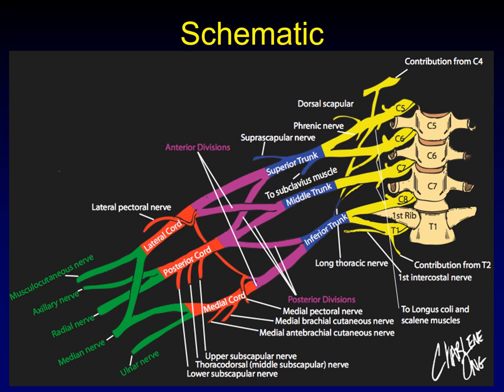Here's a schematic of what we just discussed: five contributing nerve roots, forming three trunks, which divide into anterior and posterior divisions, recombine into three cords, and then numerous branches beyond that. If you want to pause and look at this drawing in detail, do so now. Notice the relationship between T1 and the first rib.